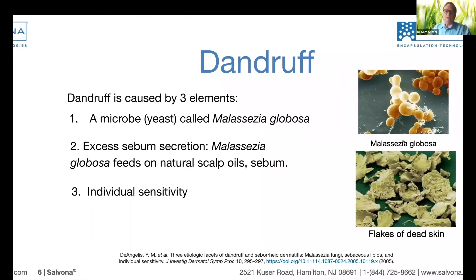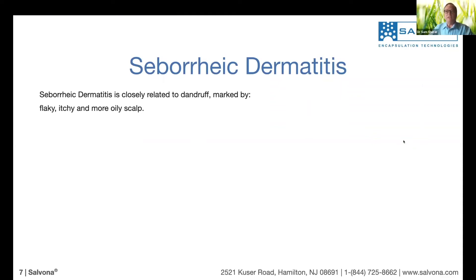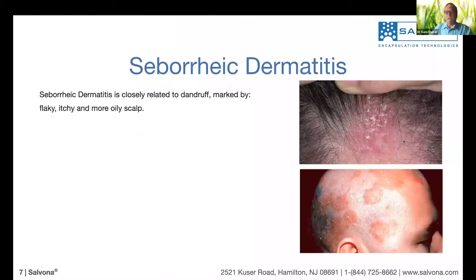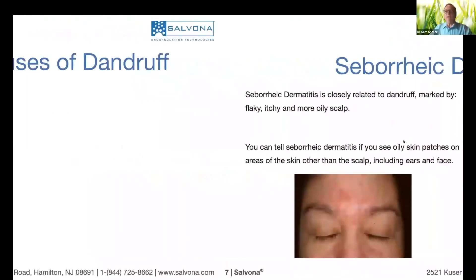These are the three conditions for dandruff. Seborrheic dermatitis is a disease somewhat similar to typical dandruff because it has flaking, itching, and oily scalp — but it's different. You can see patches of oil on the skin in other areas beyond the scalp, which indicates it's a different disease. We are not going to deal with dermatological diseases; I'm just giving background to understand how to address it from the cosmetic point of view.